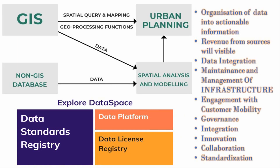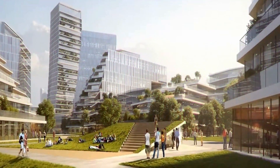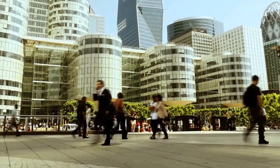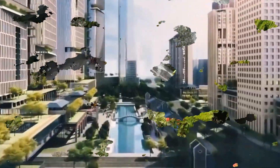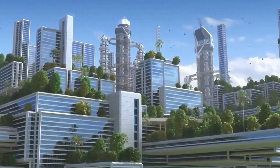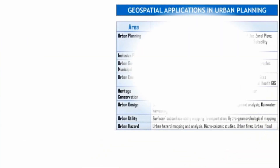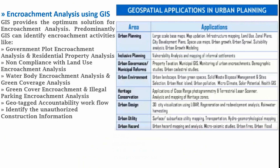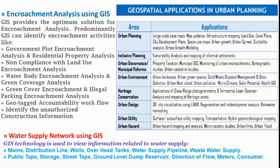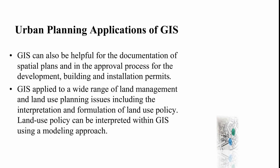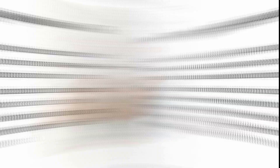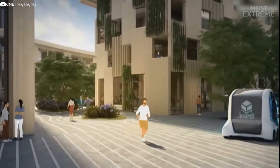To tackle this situation, we need timely and updated geospatial information for better management and planning. The geospatial application in urban planning is very much required — from inclusive urban planning, municipal governance, urban environment, heritage conservation, urban utility, management of urban hazard, and site suitability analysis. Innovative technologies like remote sensing, photogrammetry, UAV, drone, GIS, and global positioning system are the finest tools to manage a city.